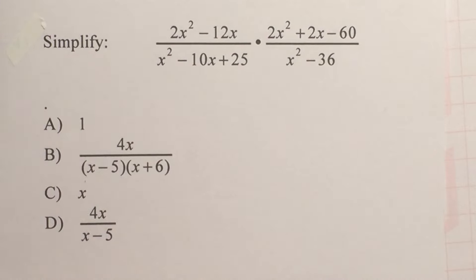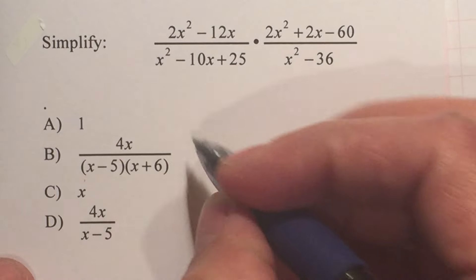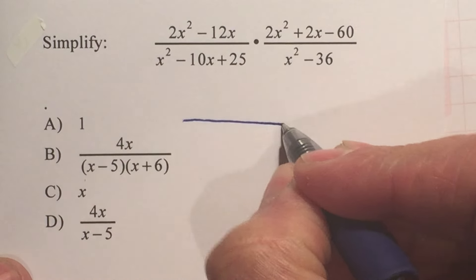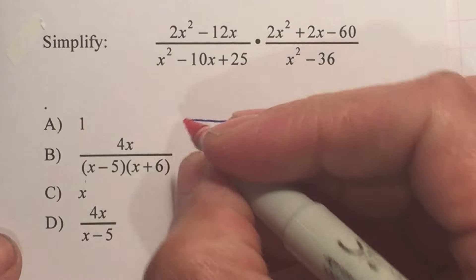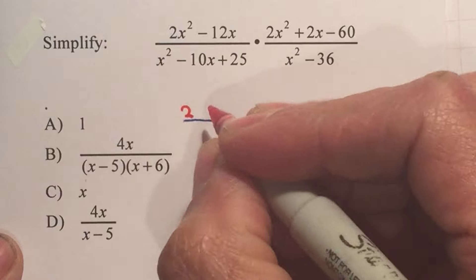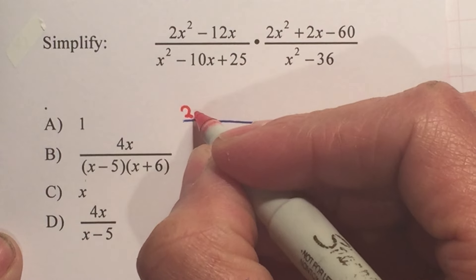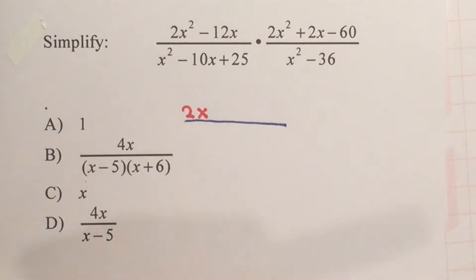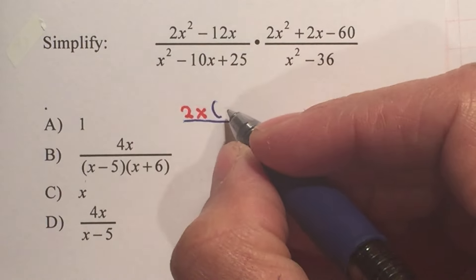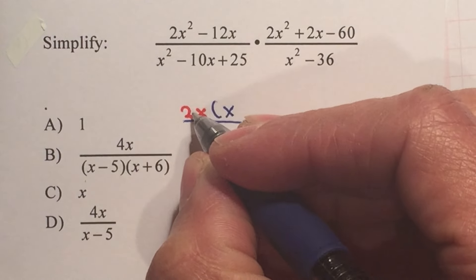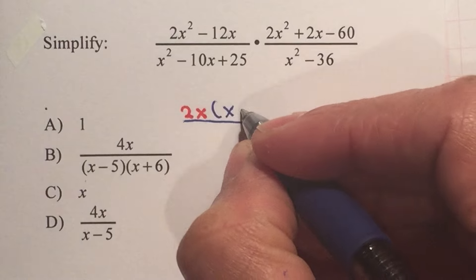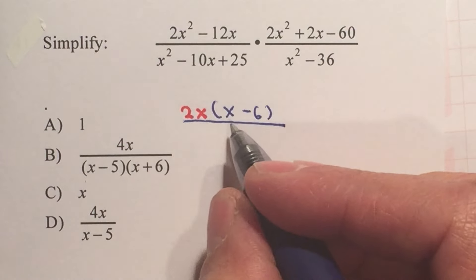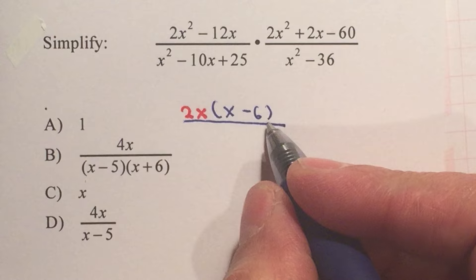So let's start with the first one. First, it is important that you take out the common factor. Is there a number that divides 2 and 12? Yes, we can factor out 2. Do they both have an x? Yes, I can factor out x. And what's left? 2x multiplied by x gives 2x squared, so that will be x. 2x multiplied by what is negative 12x will be negative 6. And x minus 6 cannot be factored any further.